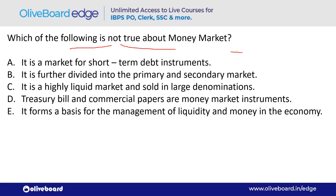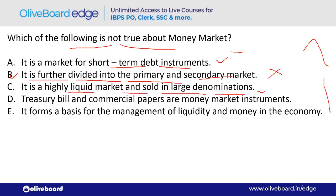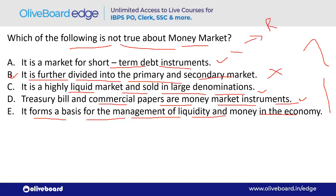Which of the following is NOT true about the Money Market? Option B — 'It is further divided into primary and secondary market' — is completely wrong. True statements: it is a short-term debt instrument market, highly liquid, sold in large denominations. Treasury Bills and Commercial Papers are money market instruments. RBI regulates the money market; SEBI regulates the capital market.